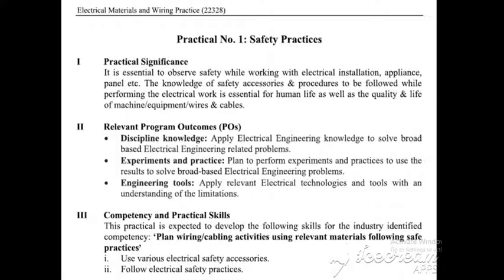Second program outcome is experiment and practice: plan to perform experiments and practices to use the results to solve a broad-based electrical engineering problem. By wearing electrical safety accessories and following safety rules, we can solve electrical engineering problems by performing and following safety activities. Third point is engineering tools: apply relevant electrical technology and tools with an understanding of the limitations. Any electrical accessories have some type of limitations, and we can improve these limitations by using advanced technologies to reduce them under various electrical activities.